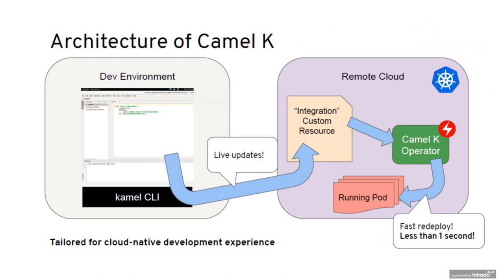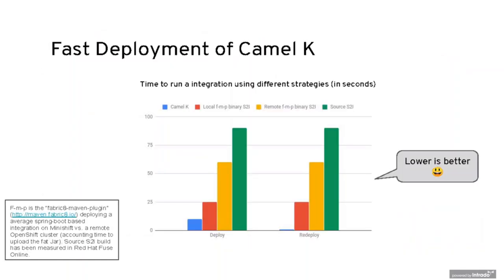The high-level architecture of CAMEL-K: on one side you have the development environment, on the other side the remote cloud cluster. Kubernetes allows extending itself using custom resource definitions (CRDs). With CAMEL-K, we created a number of custom resources for integration. Inside the cluster is a CAMEL-K operator that monitors these CRDs and reacts upon them. You write your integration code using the command line tool and upload it to the cluster. The operator figures out what to do — all the intelligence is inside the operator. It determines what code integration you're using, builds a Docker image if necessary, and runs it in the cloud. This can happen really fast, sometimes in less than a second.